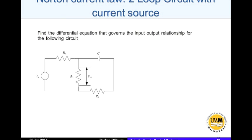In this short video we'll look at the application of Norton's current law to a two-loop circuit with current source. In this case we are trying to find the differential equation that governs the input-output relationship for this circuit. The input is a current source II, so this is an AC source but not a voltage source but a current source.